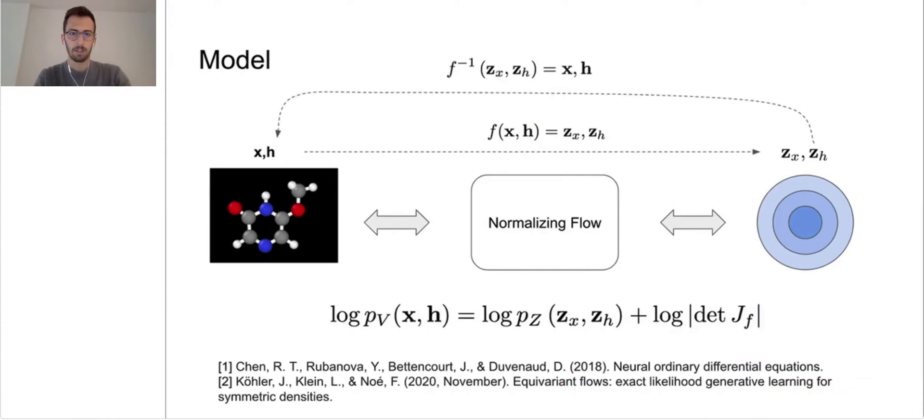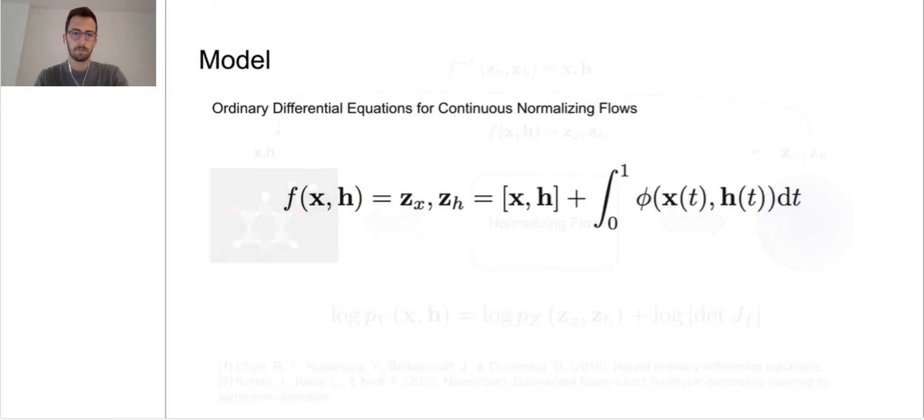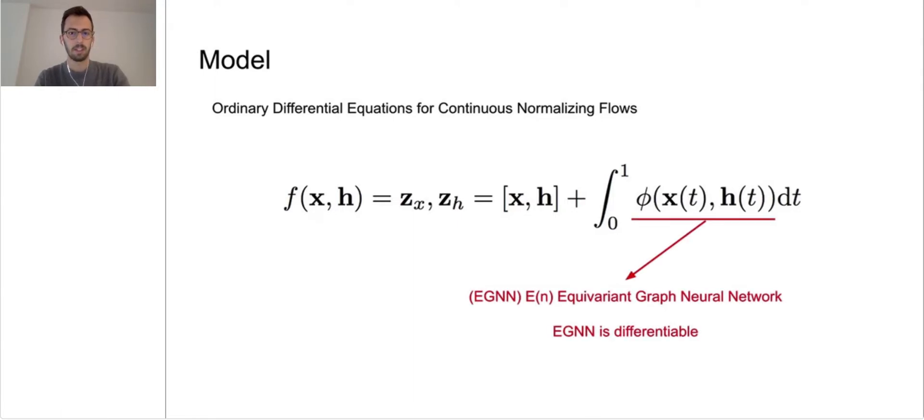But as we mentioned, the function f has to be invertible and the E(n) Equivariant Graph Neural Network that we use to build this function is not invertible by definition. Therefore, we choose to approximate its inverse by using ordinary differential equations. We define f as a differential equation integrated over a conceptual time variable t, using a differential φ predicted by the EGNN, with the only constraint of the EGNN having to be differentiable, which it is.